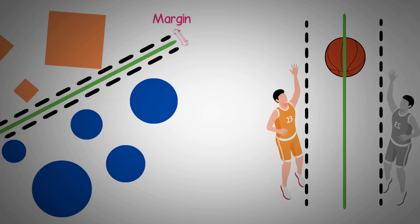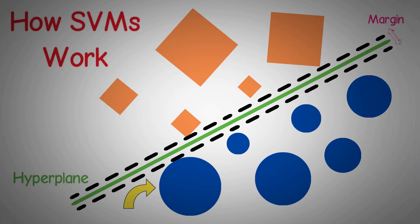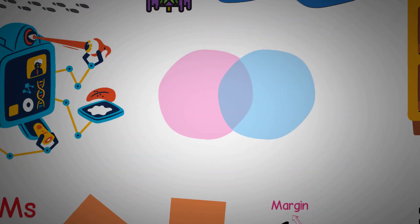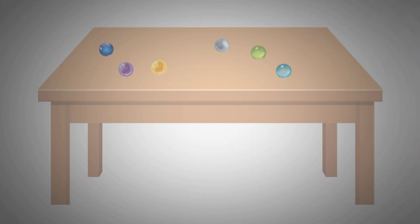But how does the SVM figure out where to draw this line? It looks at the data points closest to the boundary. These are called support vectors. Imagine you have a bunch of marbles on a flat surface, and you want to separate them into two groups using a ruler. You'd place the ruler between the marbles in such a way that it's as far as possible from the nearest marbles on each side. Those nearest marbles are your support vectors.